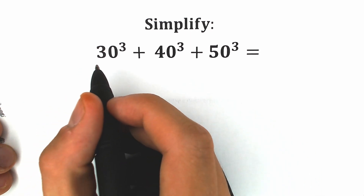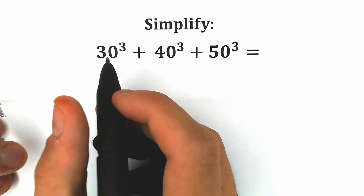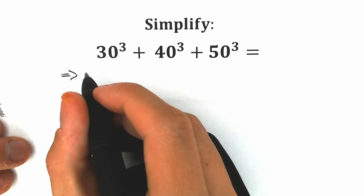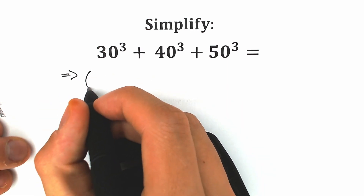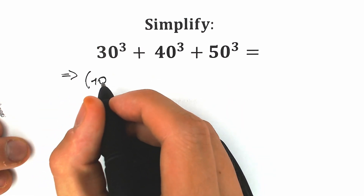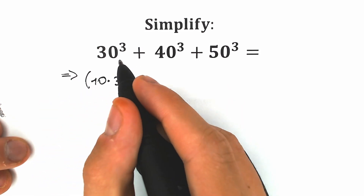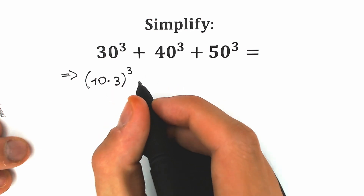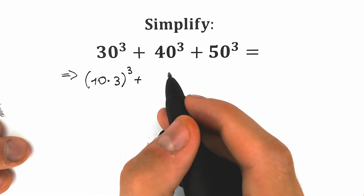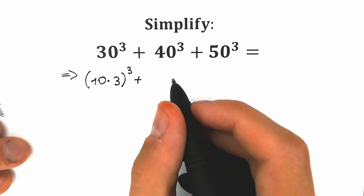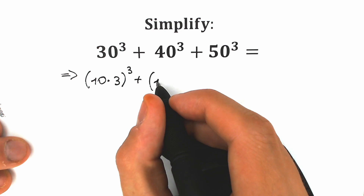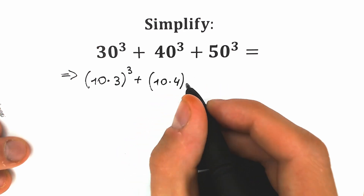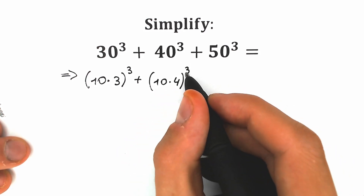First of all, this 30 can be written as 10 times 3. So 10 times 3, raised to the third power. And we are talking about 40 — so let's write 40 as 10 times 4, and we raise all of that by the third power.